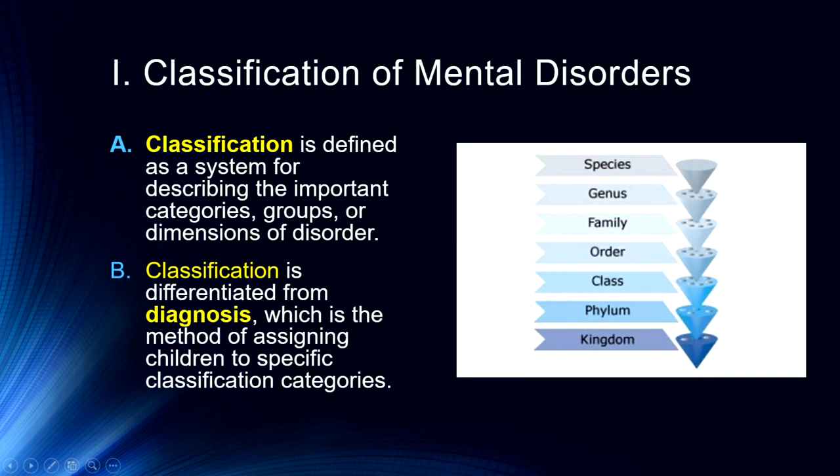Classification and diagnosis are two different things. Classification is a way in which we try to decide how to categorize what might be a disorder. Diagnosis is assigning a specific diagnosis, or placing an individual within that classification system. Much like biological classification, mental disorders are often grouped hierarchically — we talk about mood disorders and under that major depressive disorder, or anxiety disorders under which we might have panic disorder.